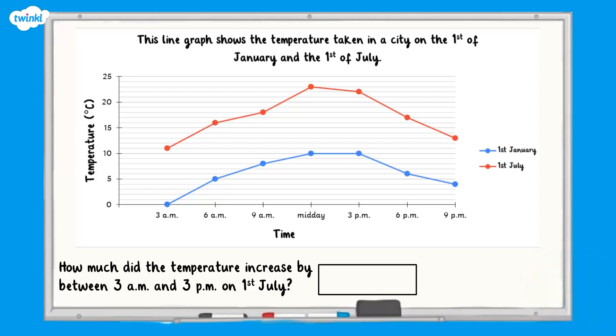Let's check your answer. The temperature at 3am was 11 degrees and temperature at 3pm was 22 degrees. Therefore, the temperature increased by 11 degrees.